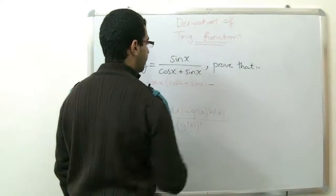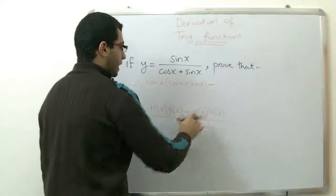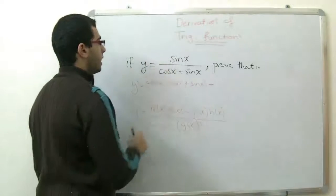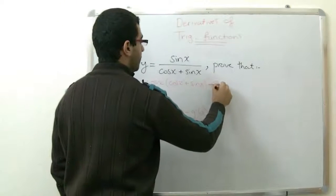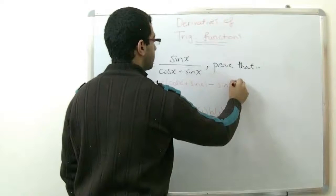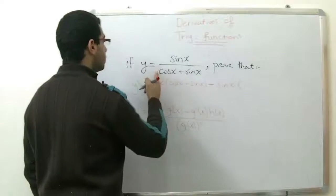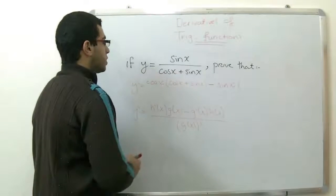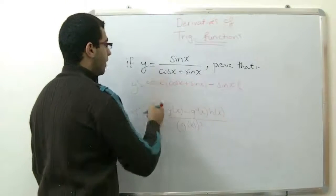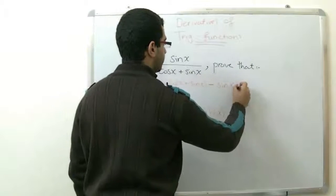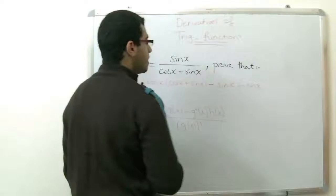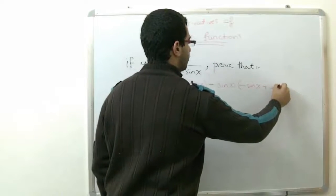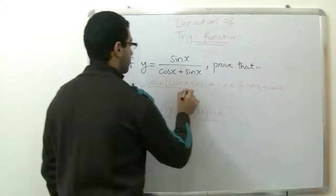We put a negative sign and go to the next part. The derivative of the denominator multiplied by the numerator. So we will write the numerator, open a bracket to get the derivative of the denominator. We have cosine x plus sine x, so the derivative of cosine x is negative sine x, and the derivative of sine x is positive cosine x. So this is our second part.